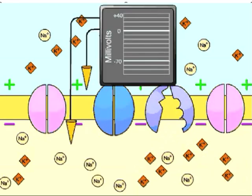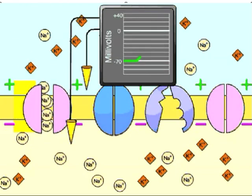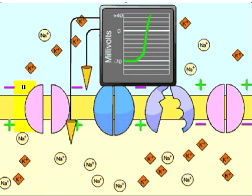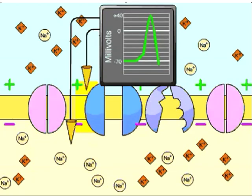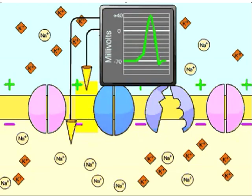Looking at another action potential moving along the membrane, measuring voltage changes at one spot: a slight change in polarity causes voltage-gated sodium channels to open, sodium ions rush in causing a reversal in membrane polarity. Sodium channels close and potassium channels open; as potassium ions rush out, the membrane returns to being negative on the inside. The sodium-potassium pump then restores the balance of ions at resting potential.